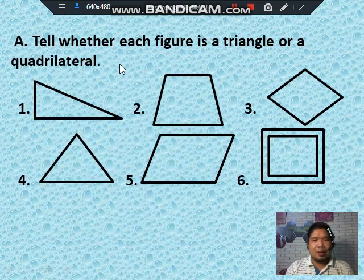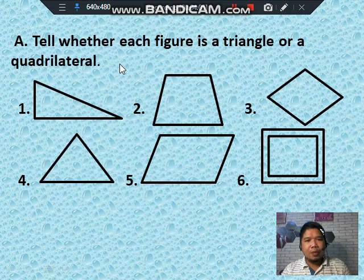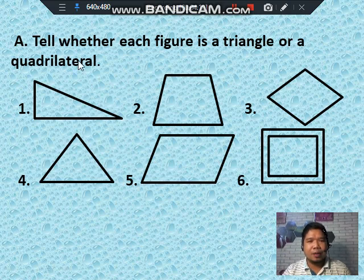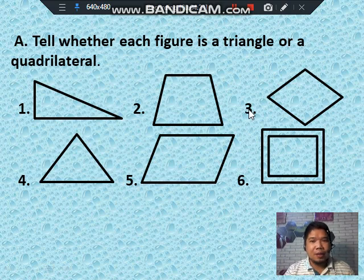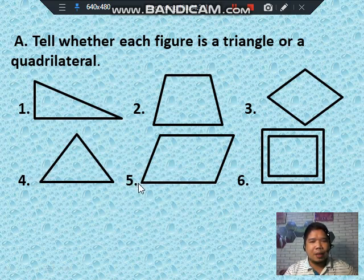Activity A: tell whether each figure is a triangle or a quadrilateral. Number 1: triangle. Number 2: quadrilateral. Number 3: quadrilateral. Number 4: triangle. Number 5: quadrilateral. Number 6: quadrilateral.